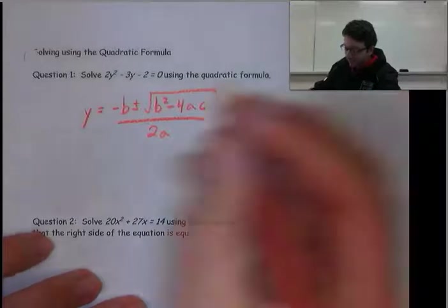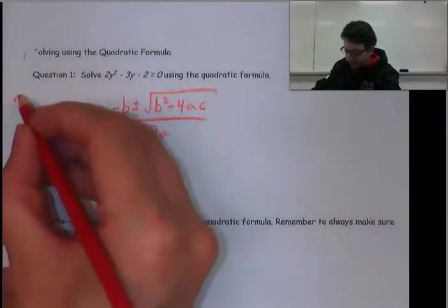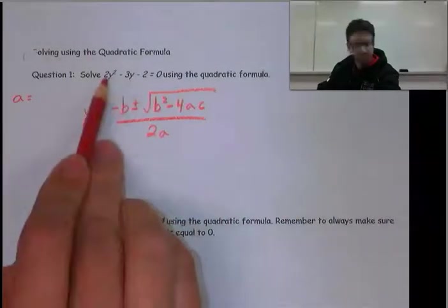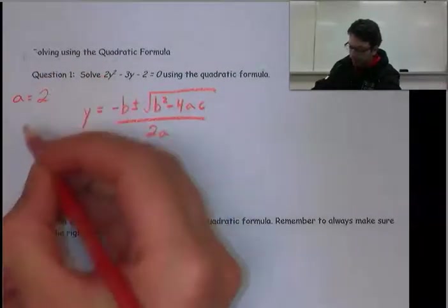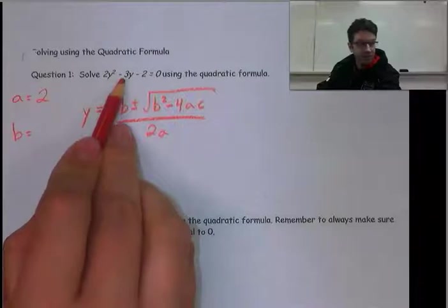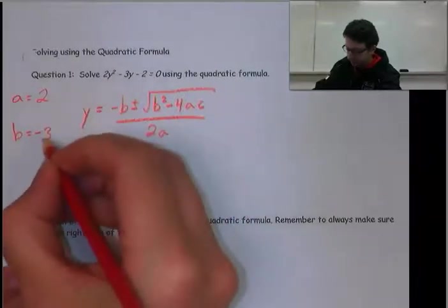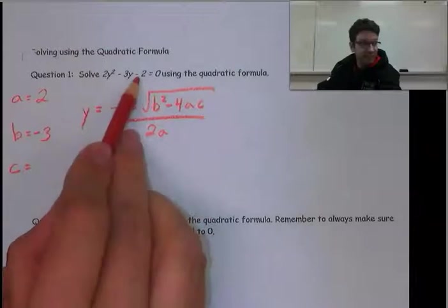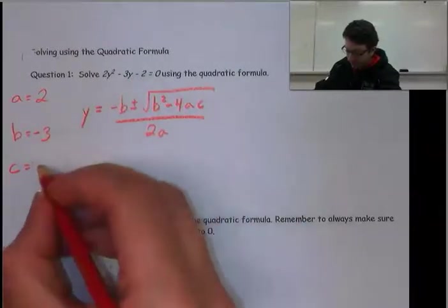Let's identify what our a, b, and c values are. The a coefficient is 2, b coefficient is -3, and c coefficient is -2. Don't forget, you need those negatives in there.